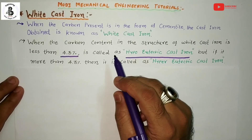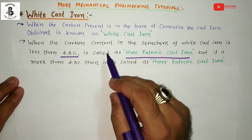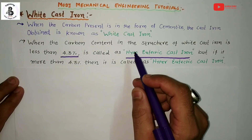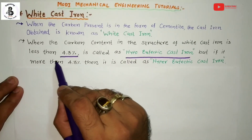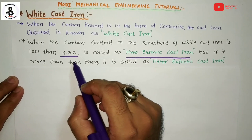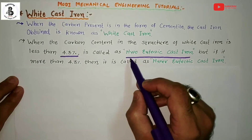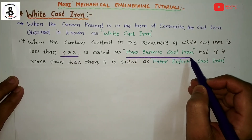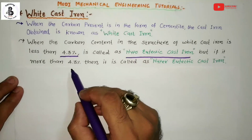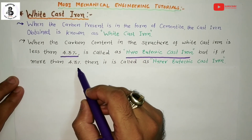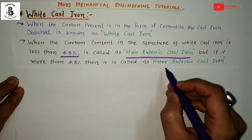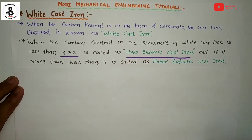For white cast irons, the carbon content in the structure is less than 4.3%, placing it in the category of hypo-eutectic cast irons. If the carbon content is more than 4.3%, it is known as hyper-eutectic cast iron.